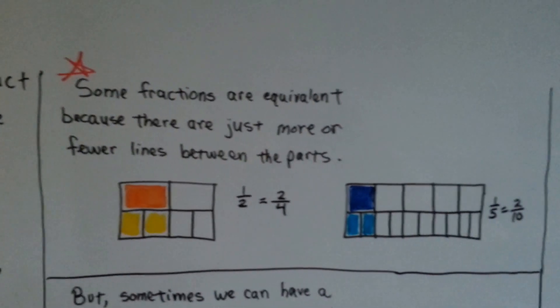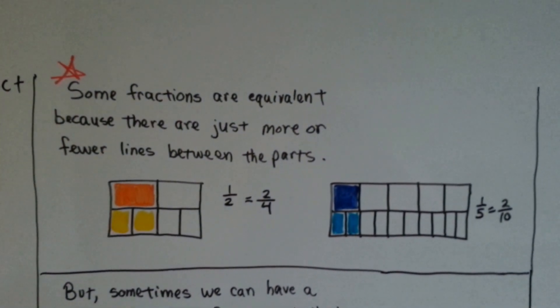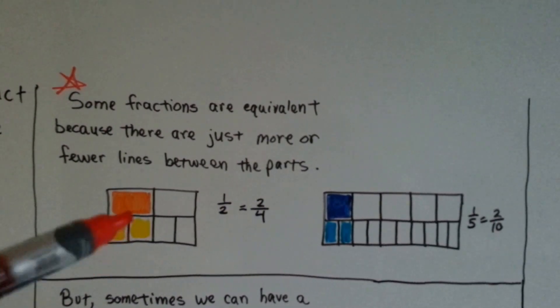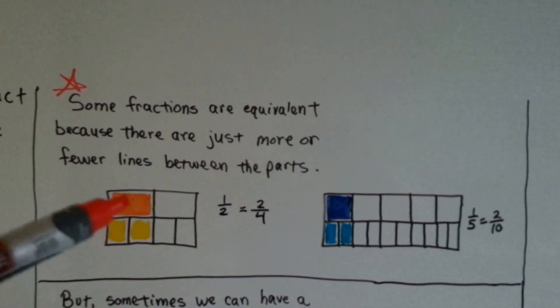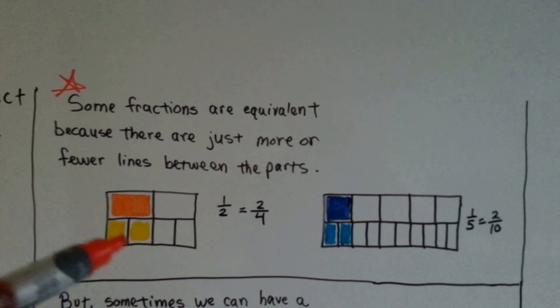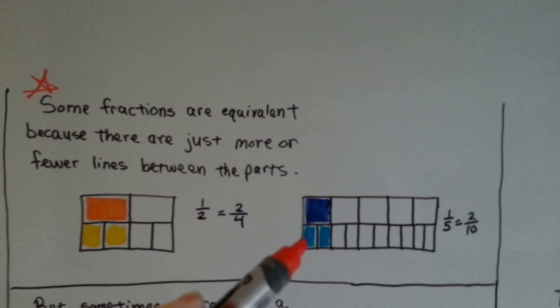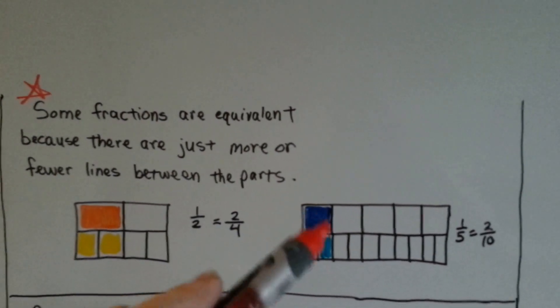So some fractions are equivalent because there's just more or fewer lines between the parts. A half is equal to two-fourths because there's just a line here. It's the same amount. The orange part is the same amount as the yellow part. It's just that that's split in two. A fifth is the same thing as two-tenths because there's just a line here. It's the same amount.